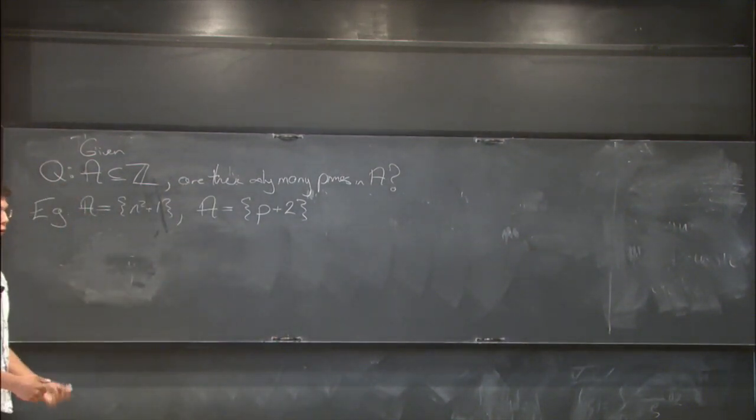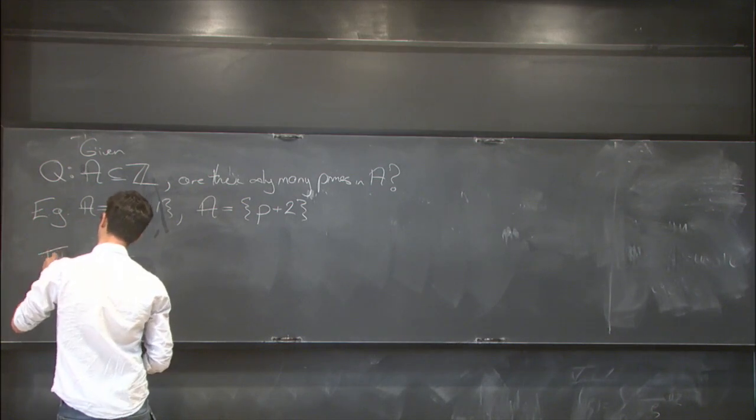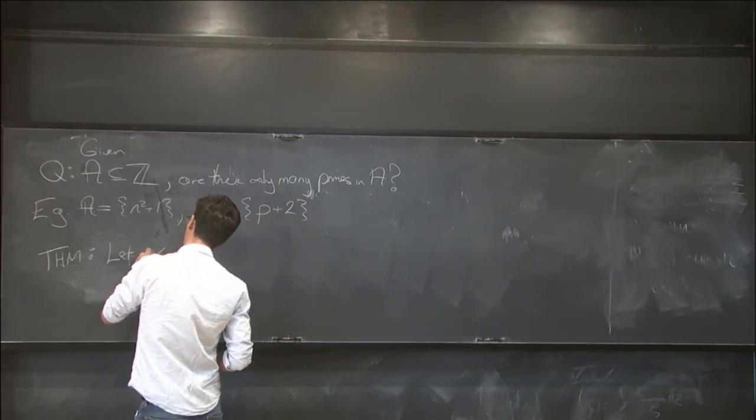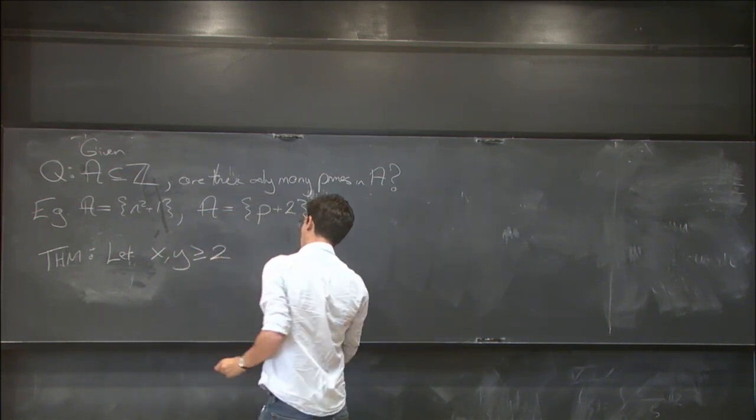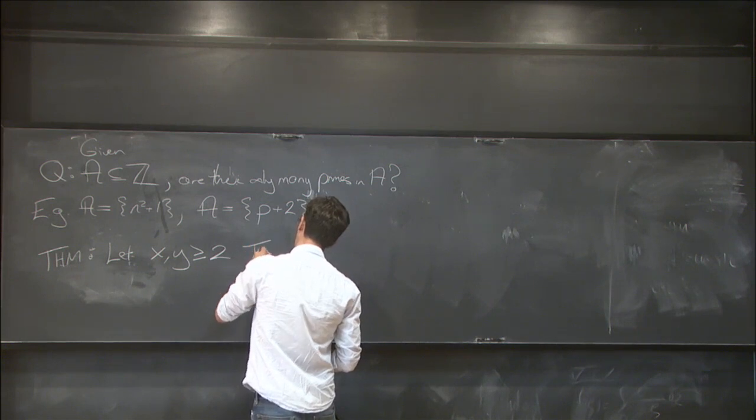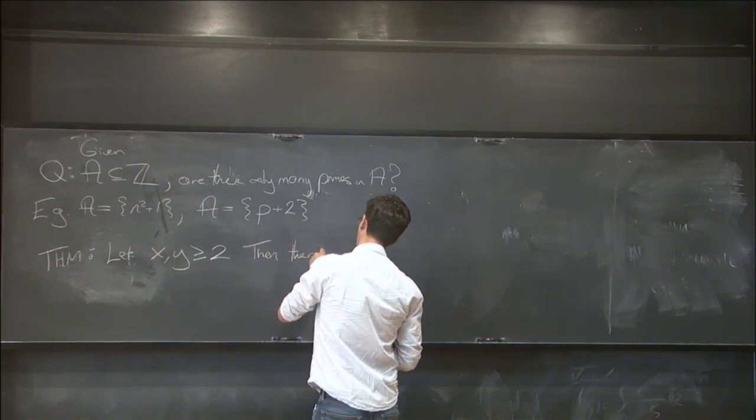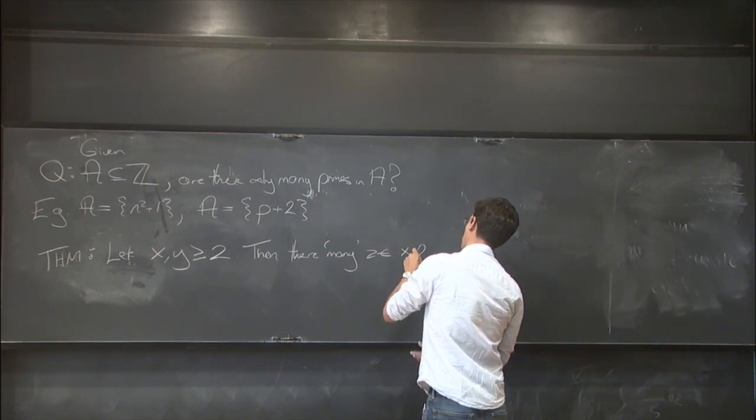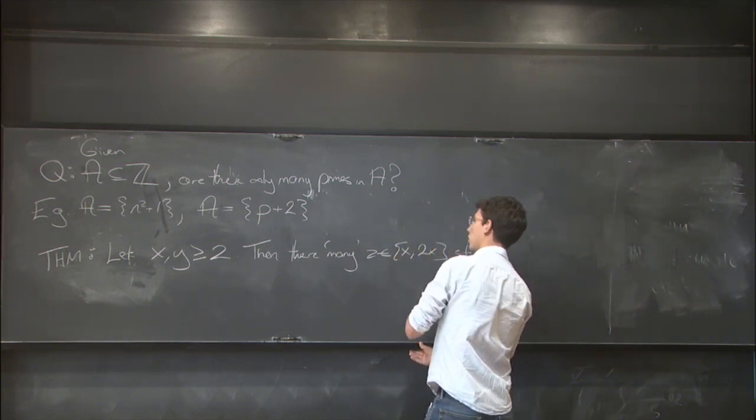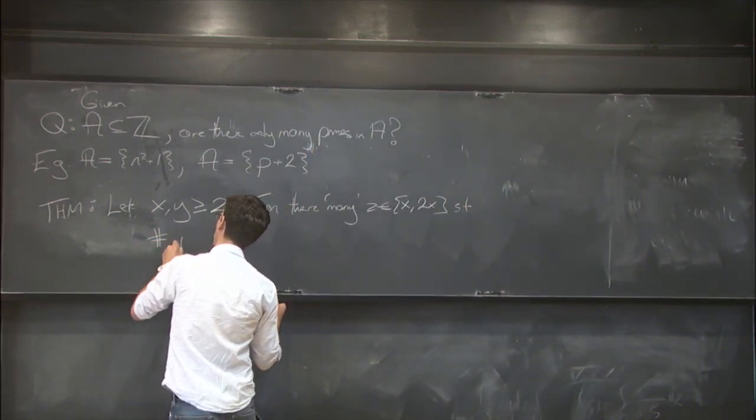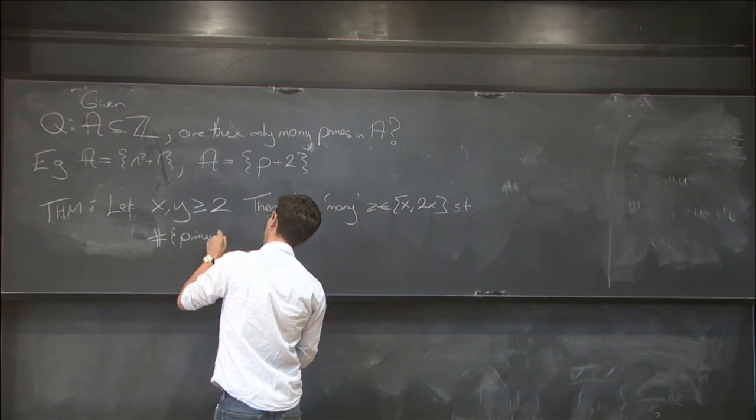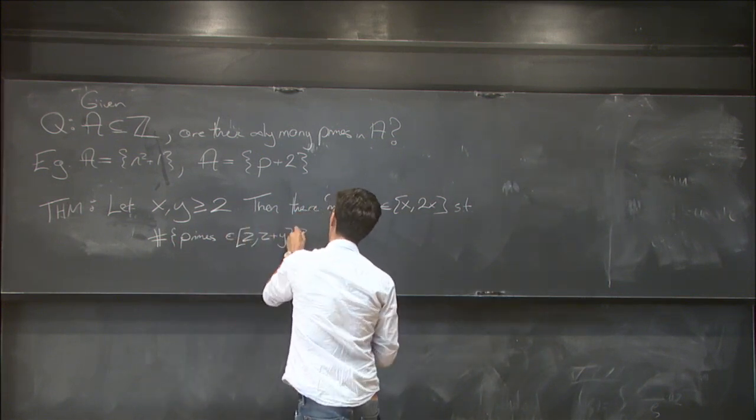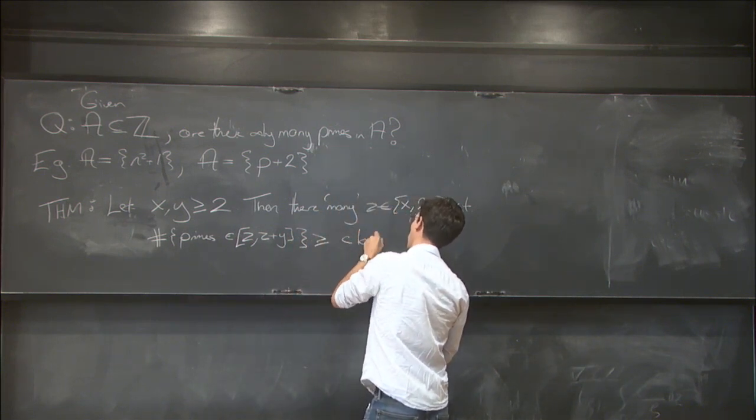But to give an example of something which I do know how to solve, we can think about looking at primes in very short intervals. So let's take two parameters x and y, bigger than or equal to 2. Then there are many z's between x and 2x such that the number of primes in the interval z to z plus y is bigger than or equal to some constant times log y.